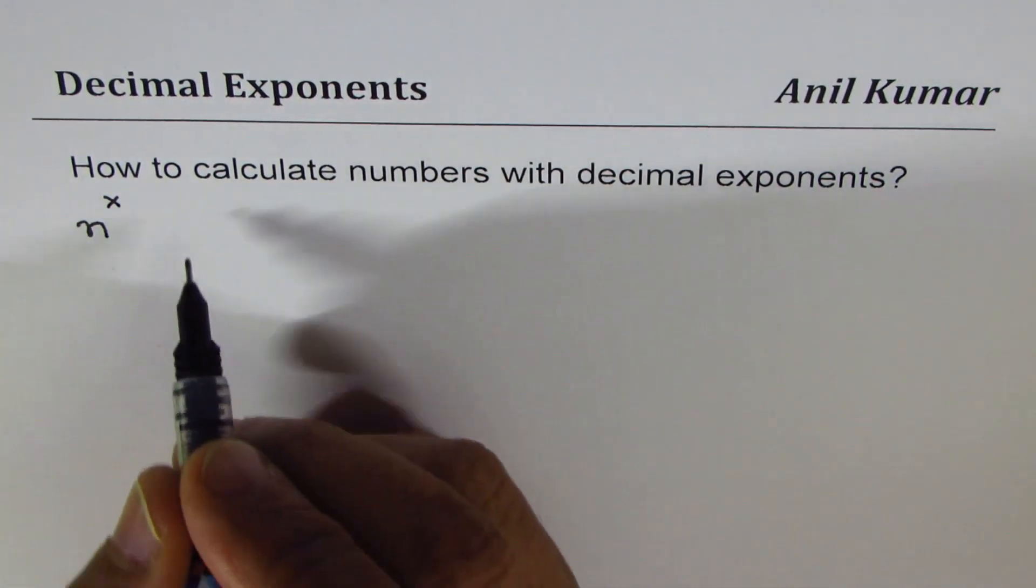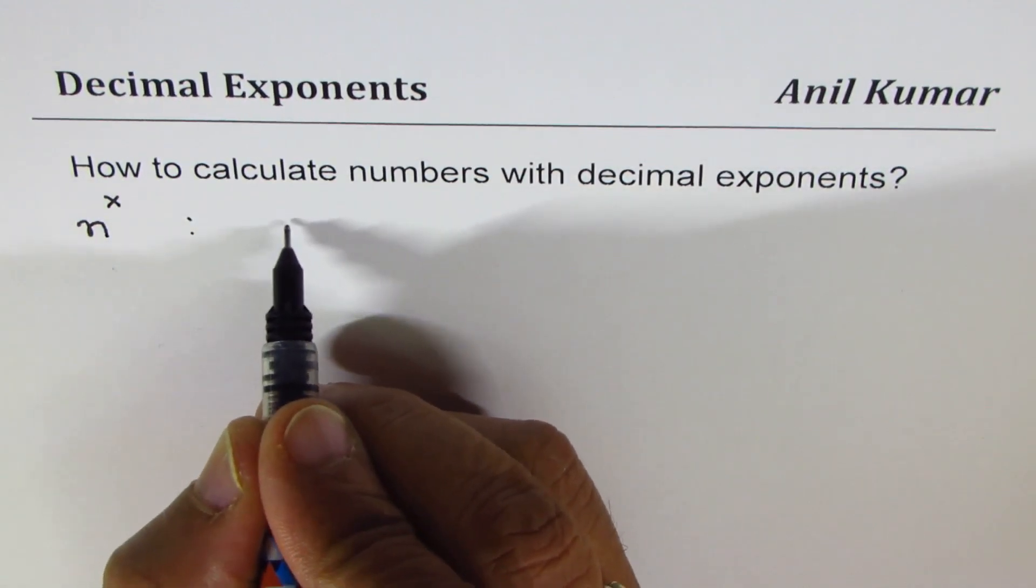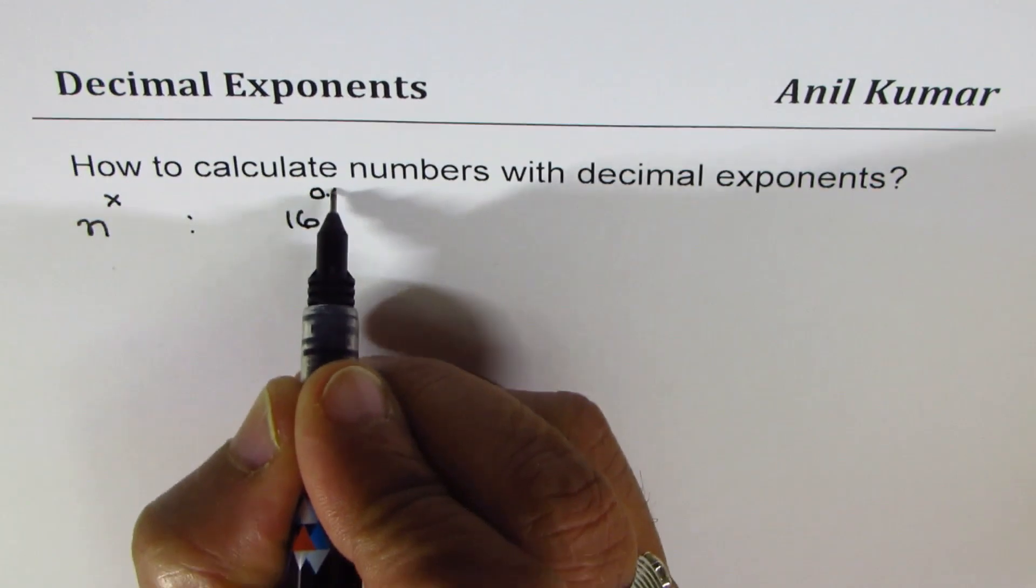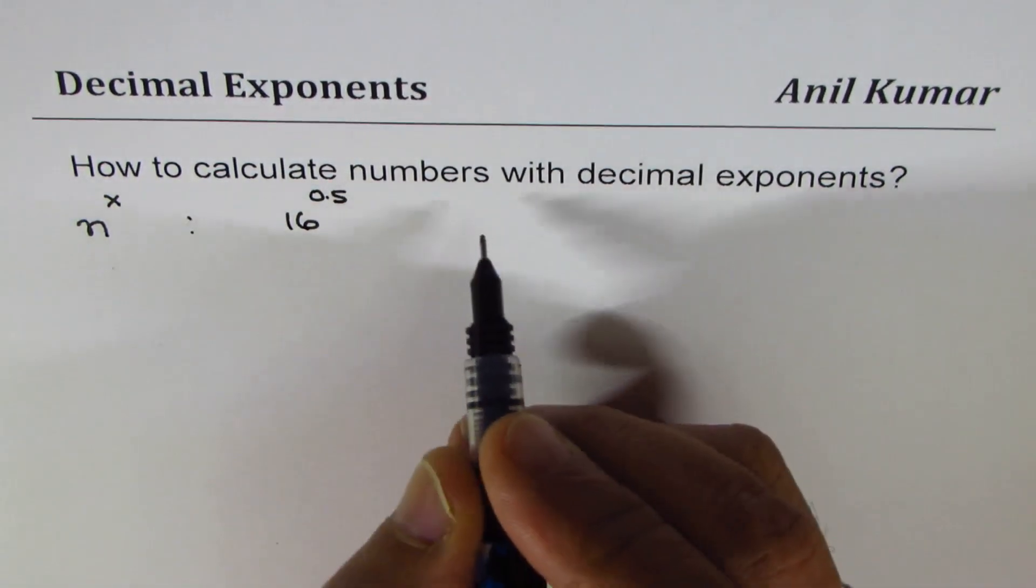For example, we'll try to find out what is 16 to the power of 0.5. We can find what is 81 to the power of minus 0.25.